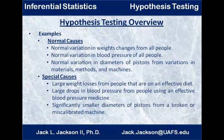Here's a manufacturing example. There's normal variation in diameters of pistons from variations in the process of making them — slight variations in materials, methods, and machines. But if the process is under control, it will produce pistons with diameters that are normally distributed. Suppose all of a sudden we take a sample and get significantly smaller diameters. That could be a result of a special cause, like a broken machine or miscalibration. We can test that with hypothesis testing.